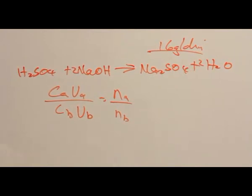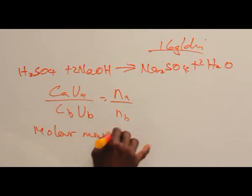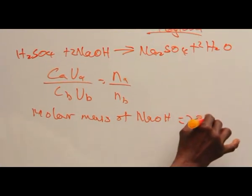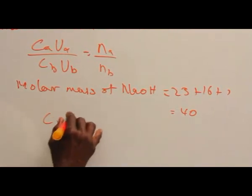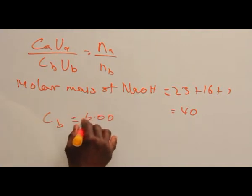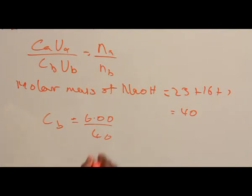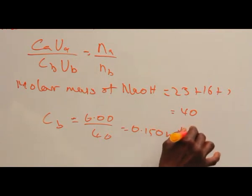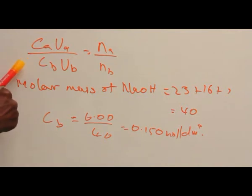In doing this, we simply divide by the molar mass. Molar mass of NaOH is 23 plus 16 plus 1, that is 40. So, the concentration of the base is 6.00 divided by 40, which gives us 0.150 mole per dm³.